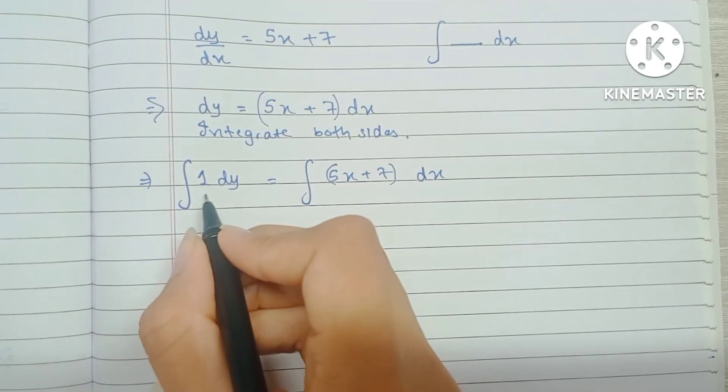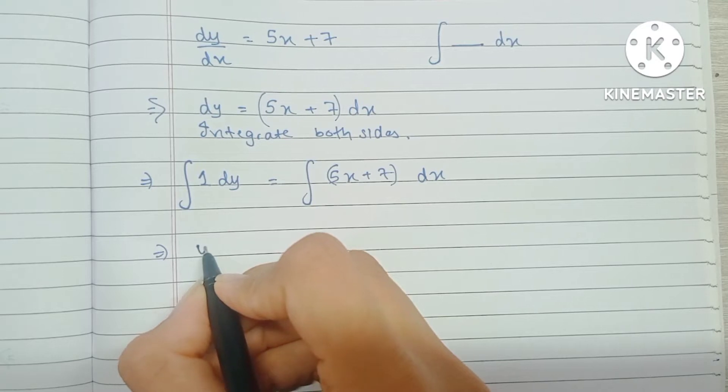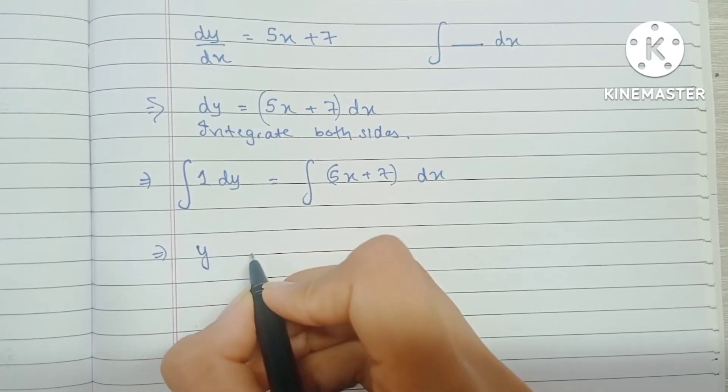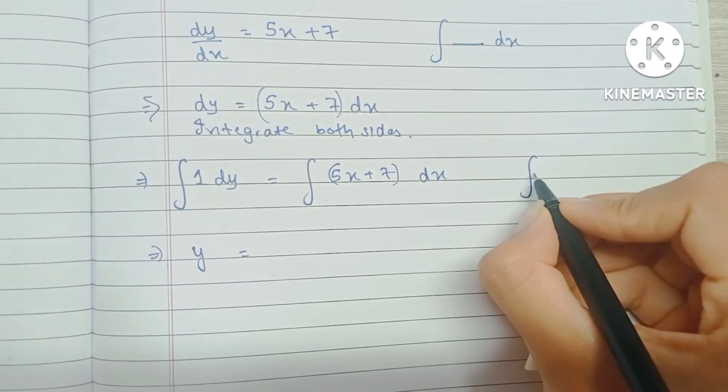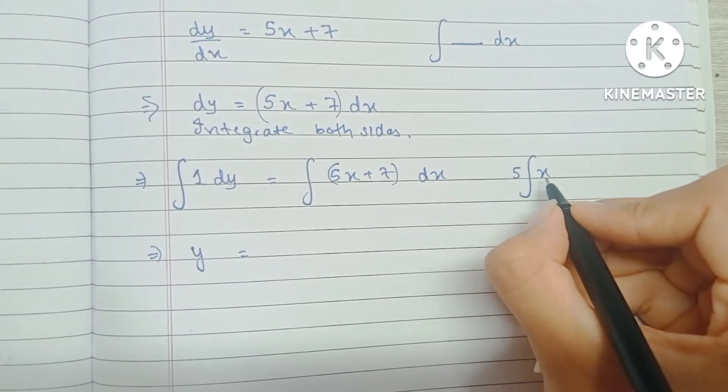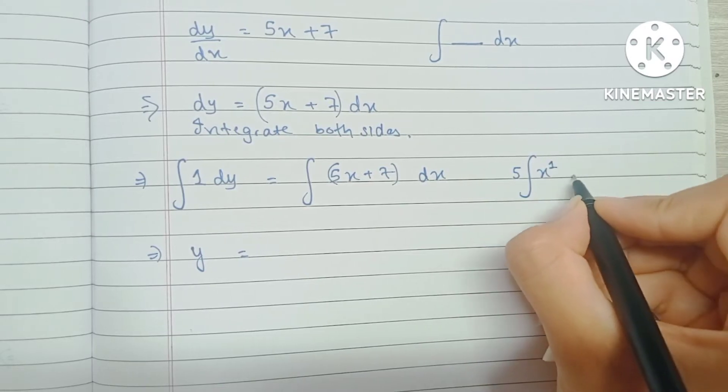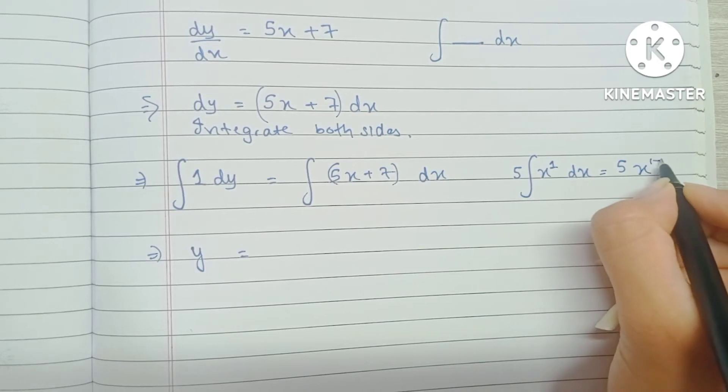When I integrate a constant with respect to y, I'm just going to get that constant into y, so this becomes y equals. Now we know that the integration of some constant into x—suppose we have 5x over here—so this is x raised to 1 dx, so it will become 5x raised to 1 plus 1 upon 1 plus 1.